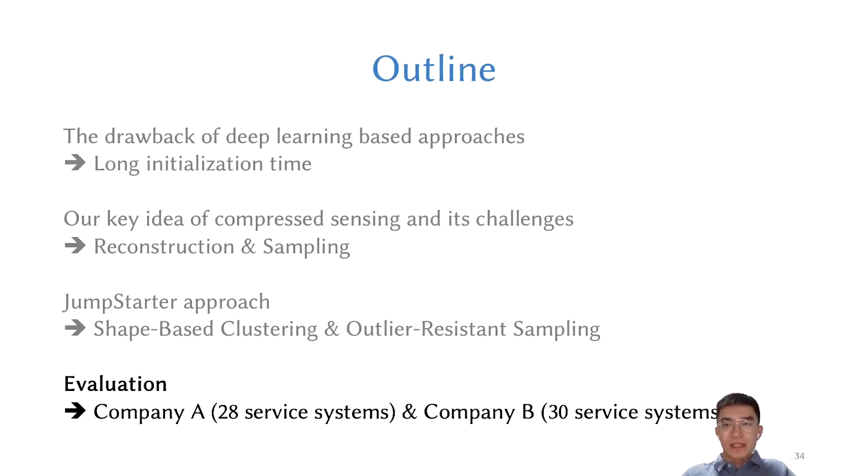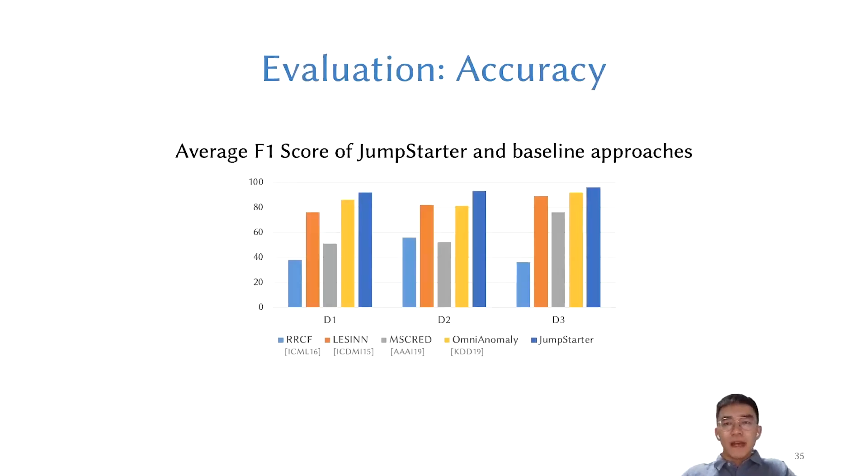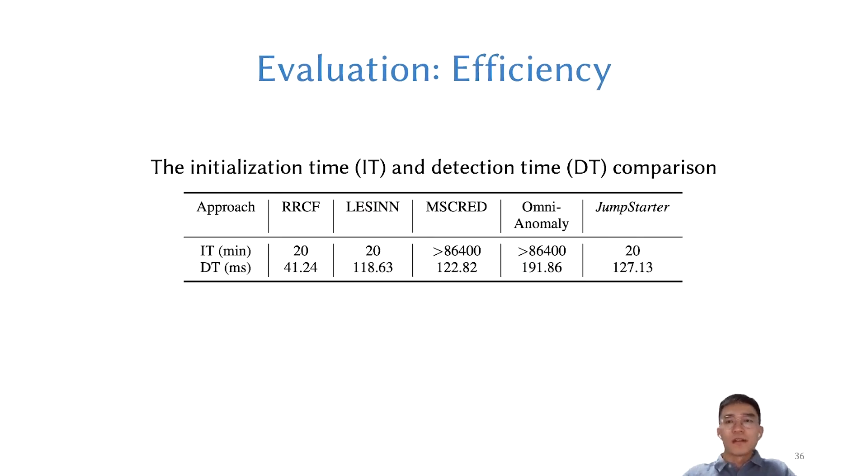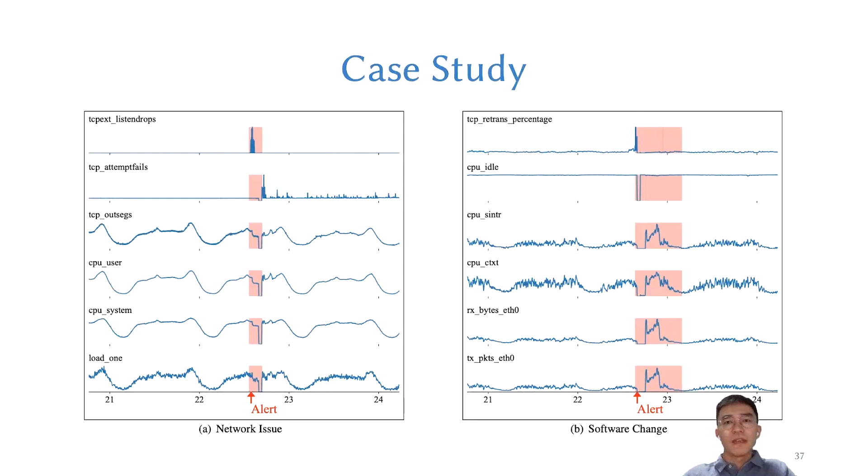We conduct a comprehensive study to evaluate the performance of JumpStarter based on three datasets from 28 and 13 large-scale industrial online service systems from two internet companies, respectively. The average best F1 score of JumpStarter across three datasets is 94%. It turns out that compressed sensing with our specific design can achieve better accuracy in anomaly detection than other approaches. Moreover, JumpStarter can quickly initialize and is computationally efficient.